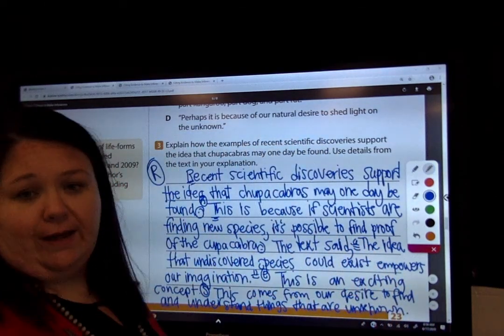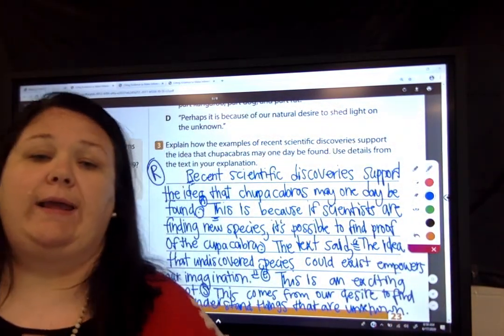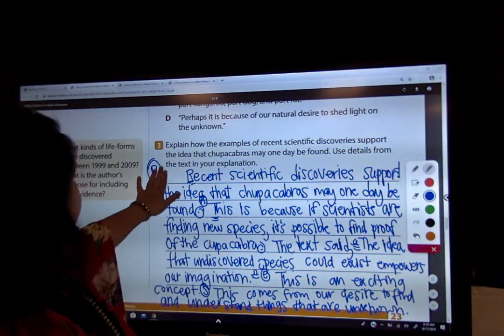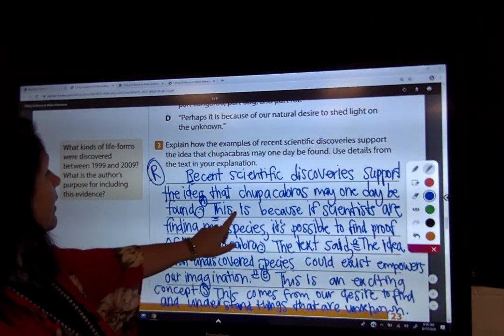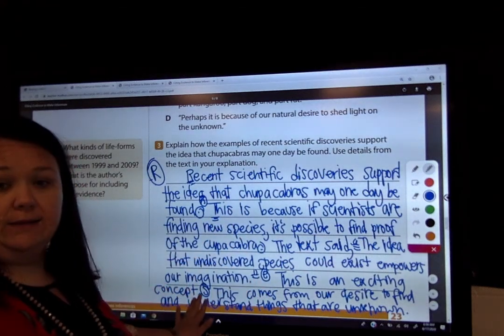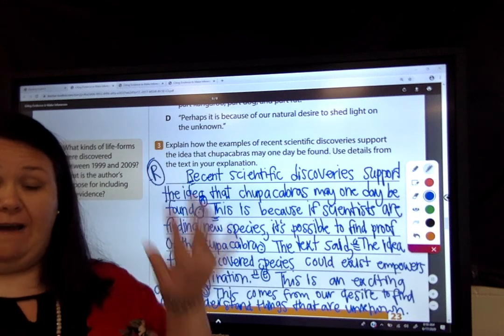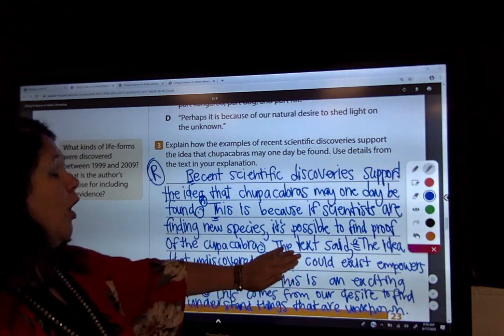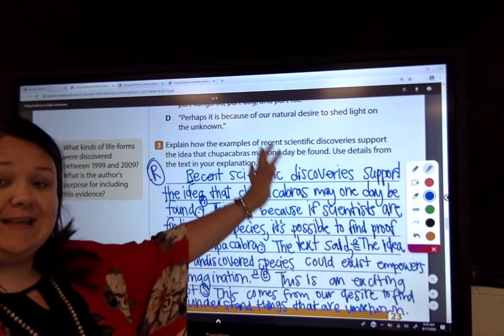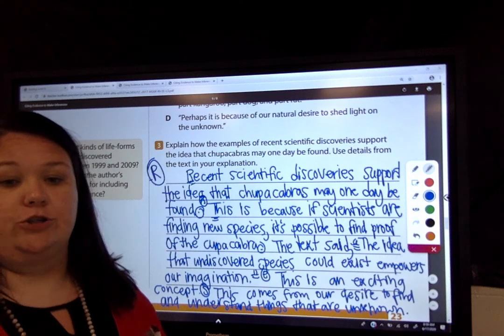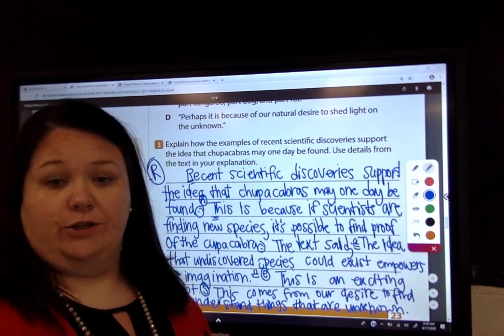So what I just did was responded to a short answer question using the RACES strategy. I made sure that I used R, A, C, E, S. That means I had five sentences. I used capital letters and I used periods. On my C, I copied it exactly from the text. This is the way that you used the RACES prompt to answer a short answer question.